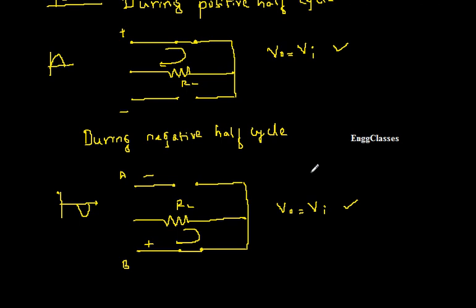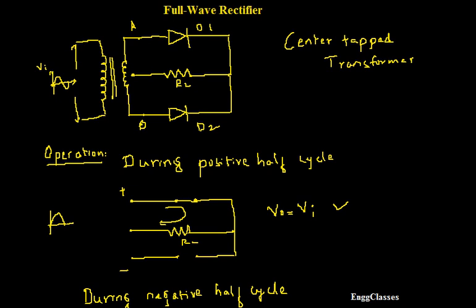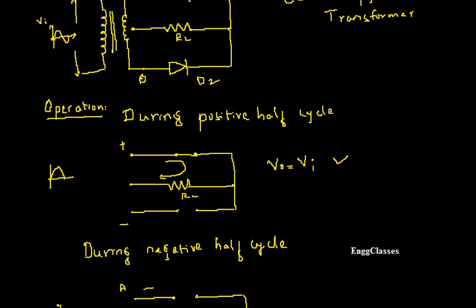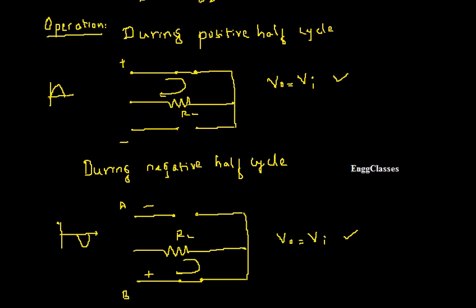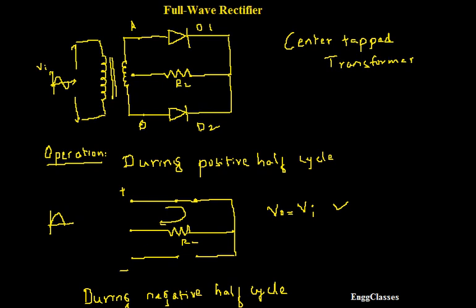This is the operation of the full wave rectifier. We initially considered the complete circuit diagram, and then explained its operation — analyzing the circuit during the positive half cycle and negative half cycle — concluding that output is obtained during both half cycles, hence the name full wave rectifier. In the next videos we will consider the different parameters of the full wave rectifier and derive each one. If there are any doubts, please let me know in the comment section. Subscribe to our channel NG Classes for more videos on basic electronics. Thank you everyone for watching.